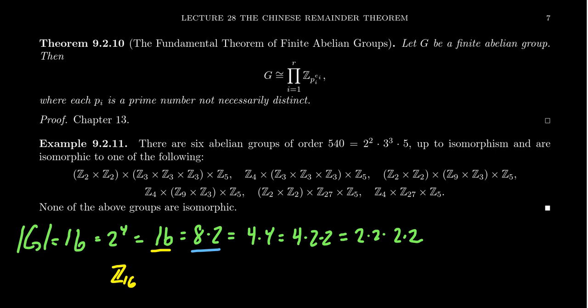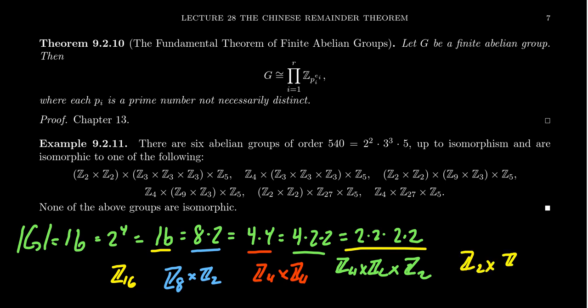We could have also the group Z8 cross Z2. We could have the group Z4 cross Z4. We could have the group Z4 cross Z2 cross Z2. And then finally, we could have the group Z2 cross Z2 cross Z2 cross Z2.